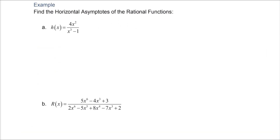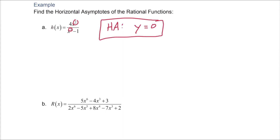Let's look at an example for horizontal asymptotes. To find them, we simply compare the degrees. The degree of the top is 2 and the degree of the bottom is 3. Since the top has a smaller degree than the bottom, the horizontal asymptote is simply y equals 0 — the x-axis. No work needed.